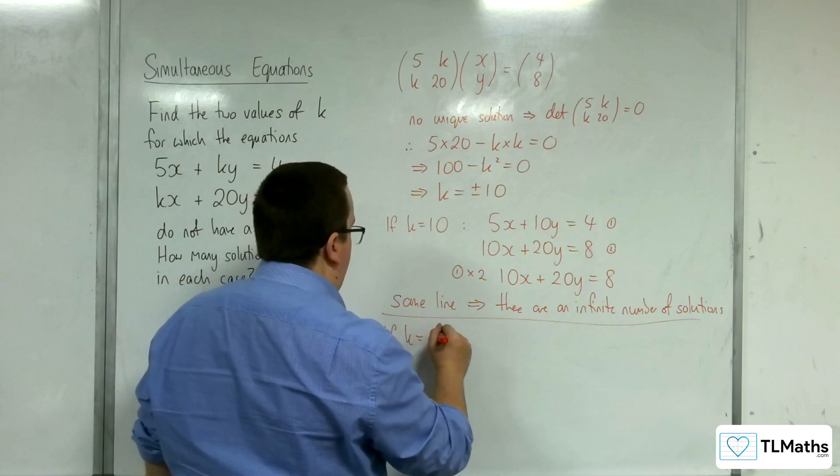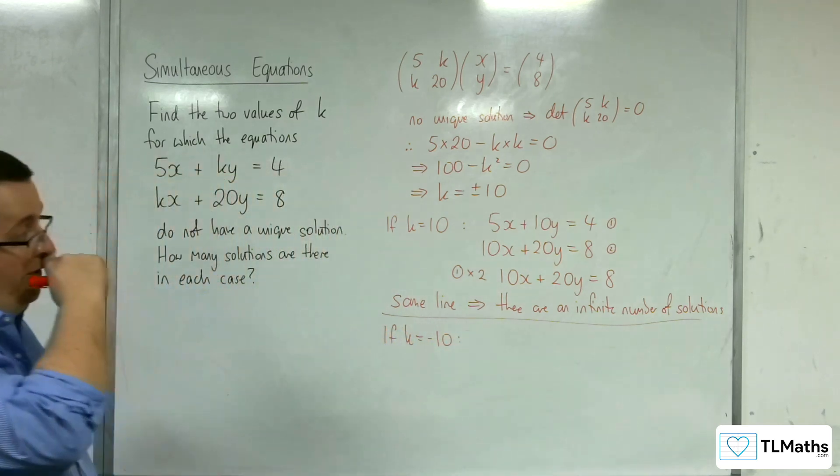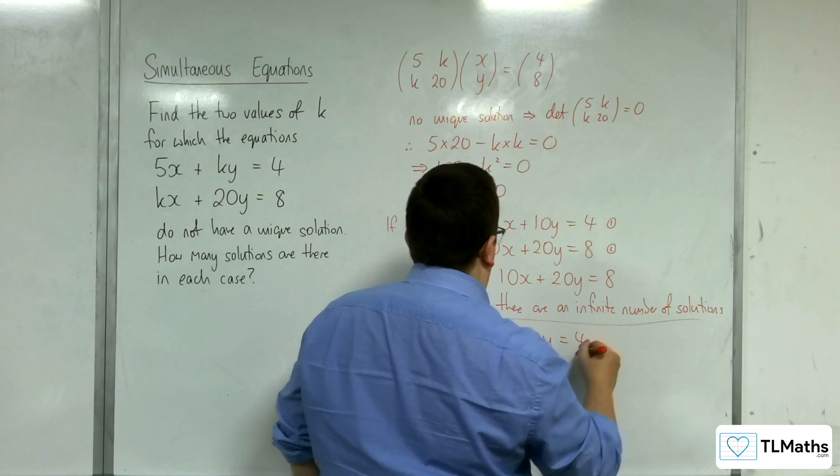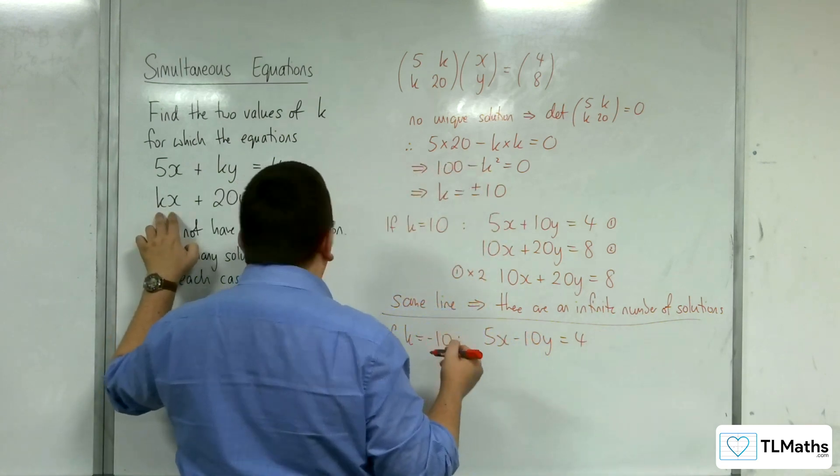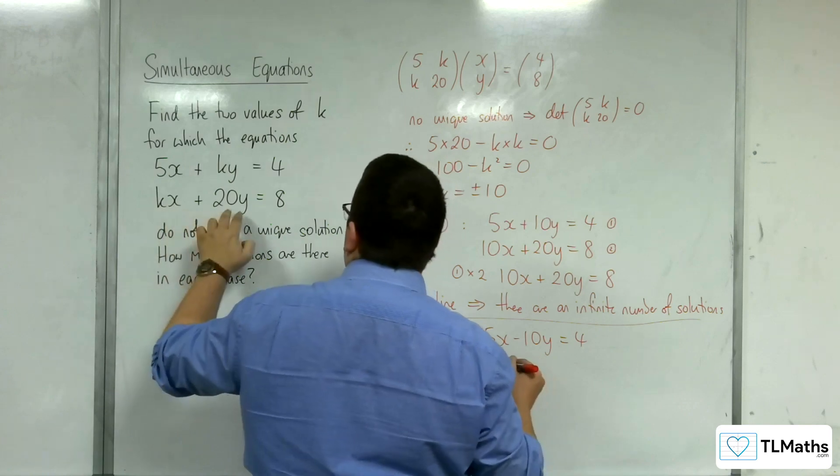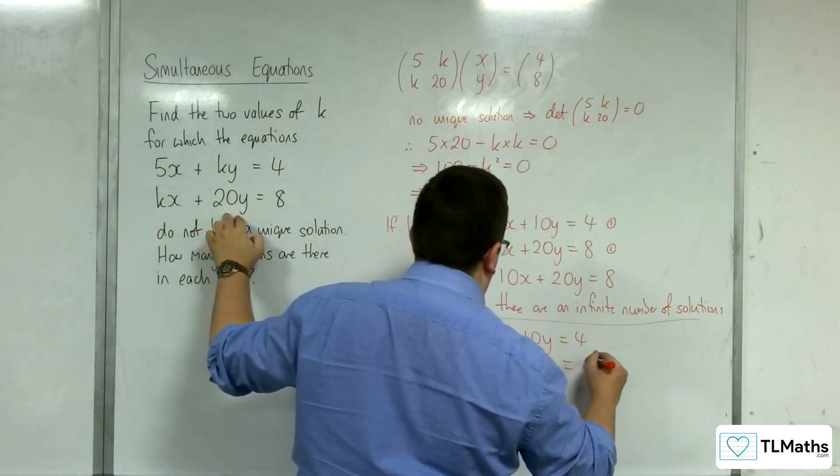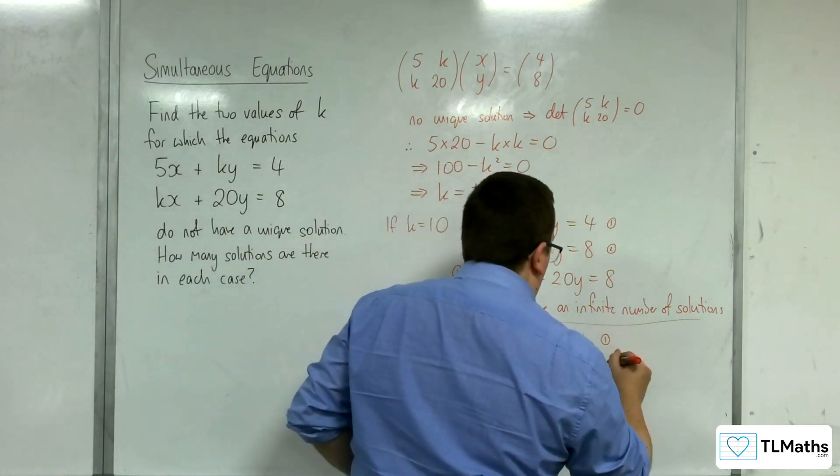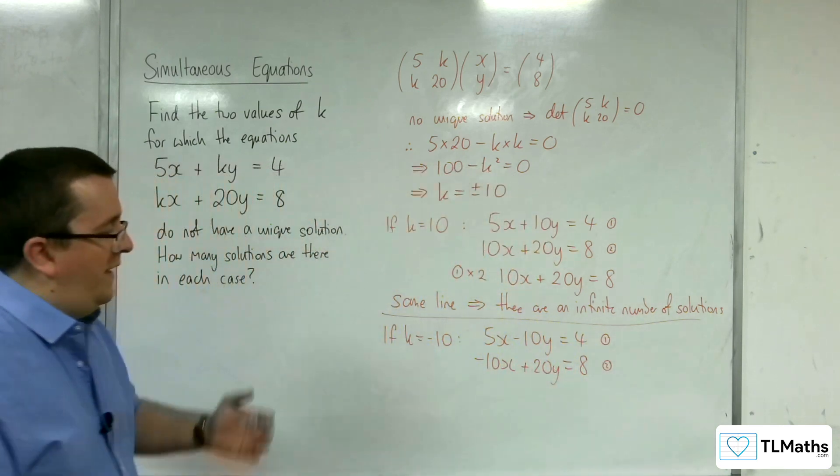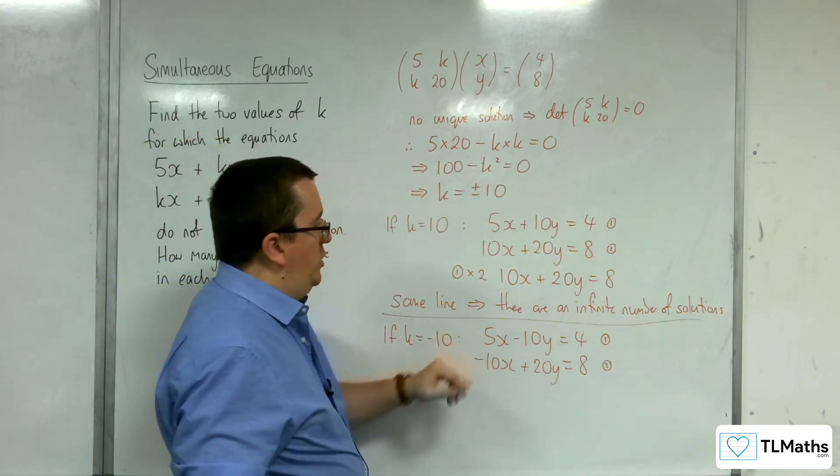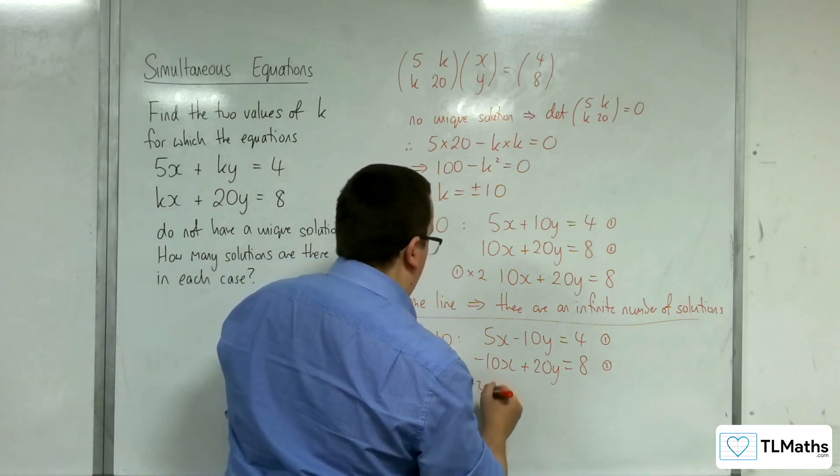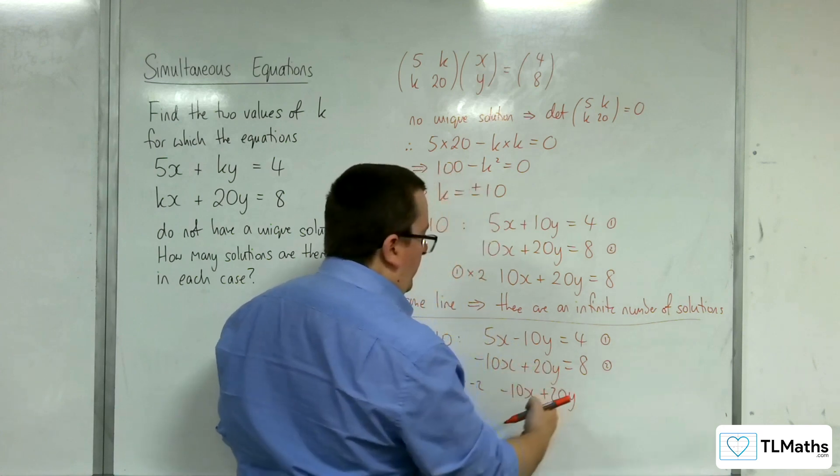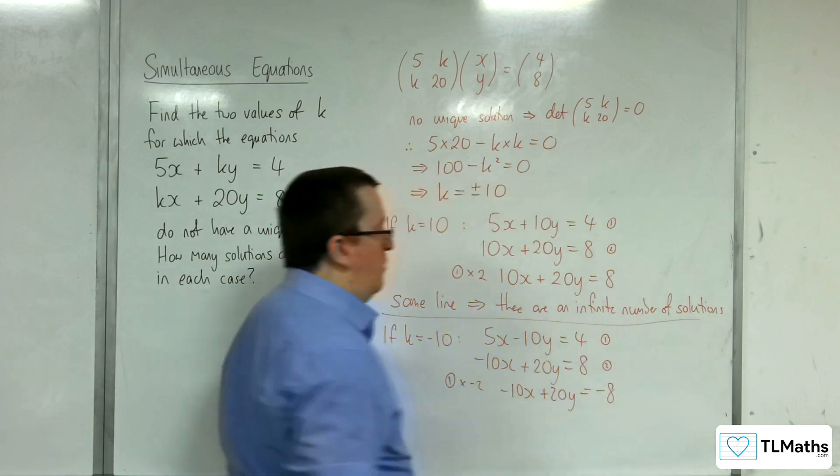If k is equal to negative 10, then what do we have? We'd have 5x take away 10y is equal to 4, and we've got minus 10x plus 20y is equal to 8. That's my equation 1, that's my equation 2. Now, you'll notice that actually they are still linked. I could multiply equation 1 through by negative 2 this time, and I'd get minus 10x plus 20y. So those bits are the same, but I would get negative 8 on the right-hand side.